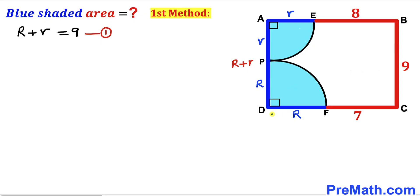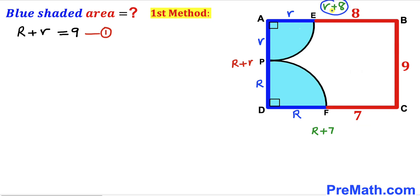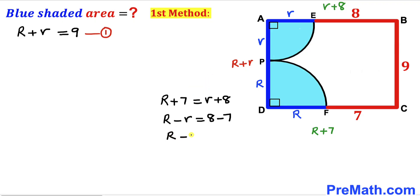Side CD length is R plus 7, and side AB length is r plus 8. Since these two side lengths are equal, I can equate them: R plus 7 equals r plus 8. Moving lowercase r to the left and 7 to the right gives us R minus r equals 1. This is equation 2.